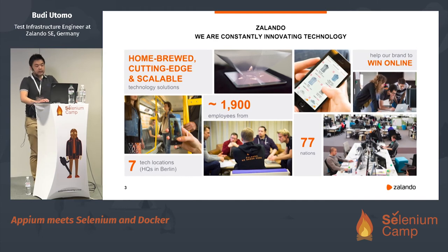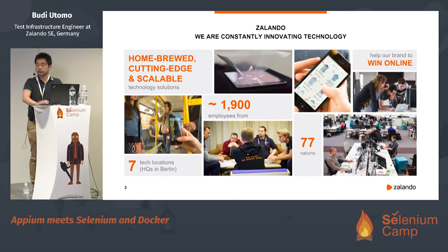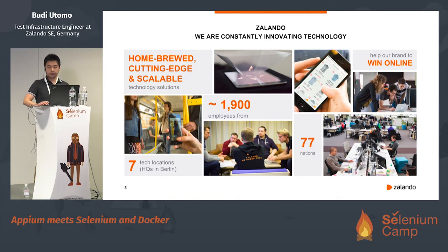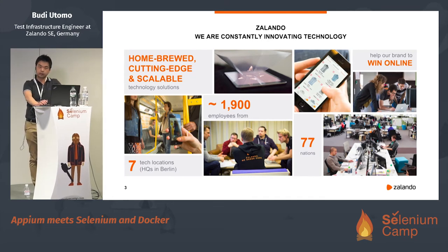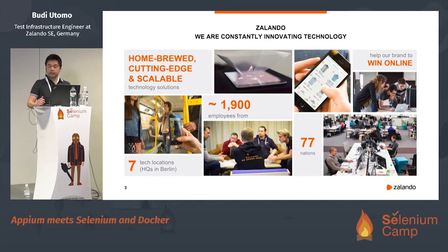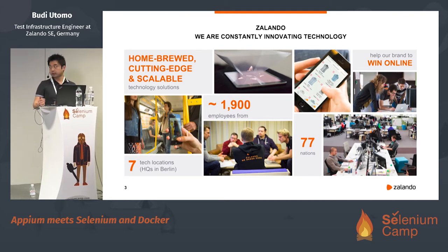So Sirengo — maybe some of you have heard about Sirengo. Sirengo is one of the largest online shopping companies in Europe. We have seven tech locations which are Dublin, Helsinki, Dortmund, Afro, Munchengladbach, Hamburg, and Berlin as headquarters. I work in one of the buildings in Berlin. Sirengo has around 1,900 tech employees from 77 nations.